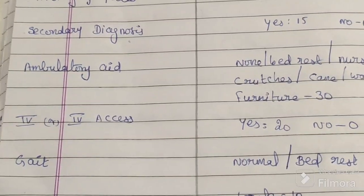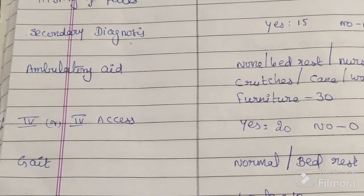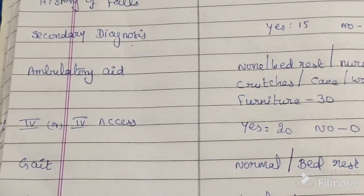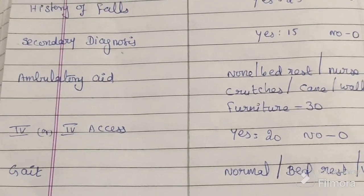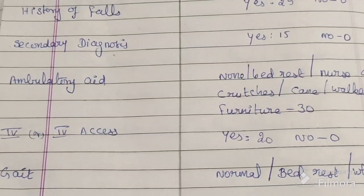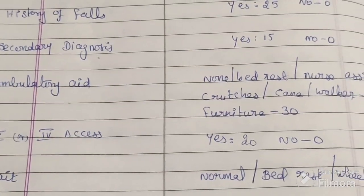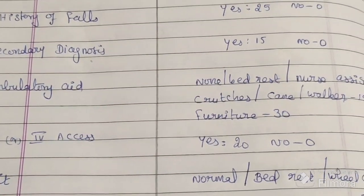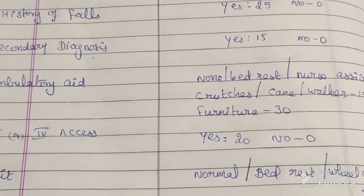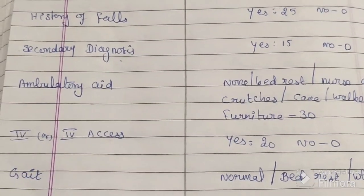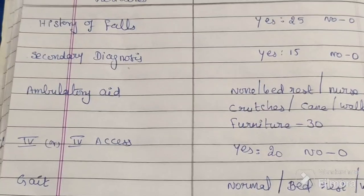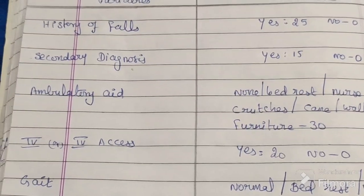The fourth variable is IV or IV access. If your patient has any intravenous access, give a score of 20. If not, give a score of 0.